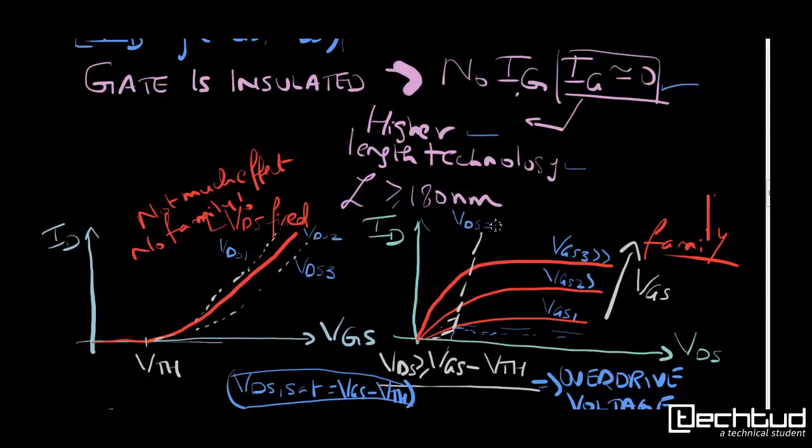So whenever VDS is greater than or equal to VGS-VTH, you have a constant current source behavior which varies with channel length modulation effect. So if this is the constant curve, this is your variation that comes.